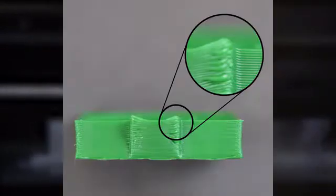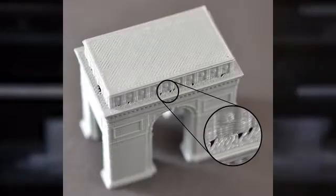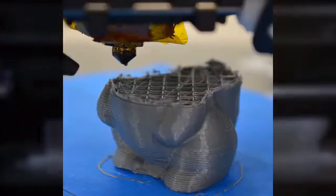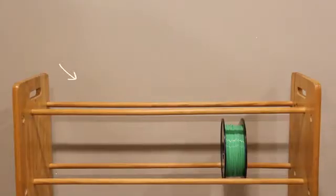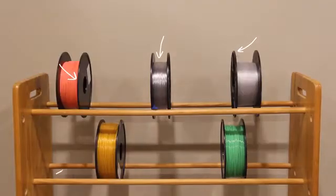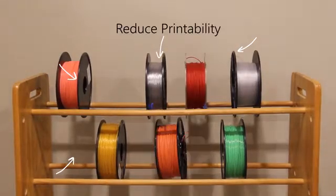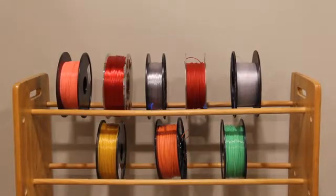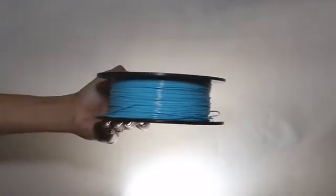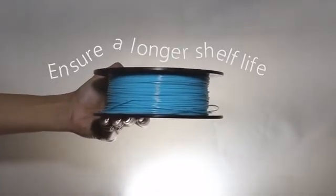Moisture in a filament can cause various 3D printing problems, from partially failed prints to completely unprintable filaments. Having your filament spools lying around will allow it to absorb the moisture in the air and reduce its printability. It is important to store the filament in a dry condition to ensure longer shelf life.